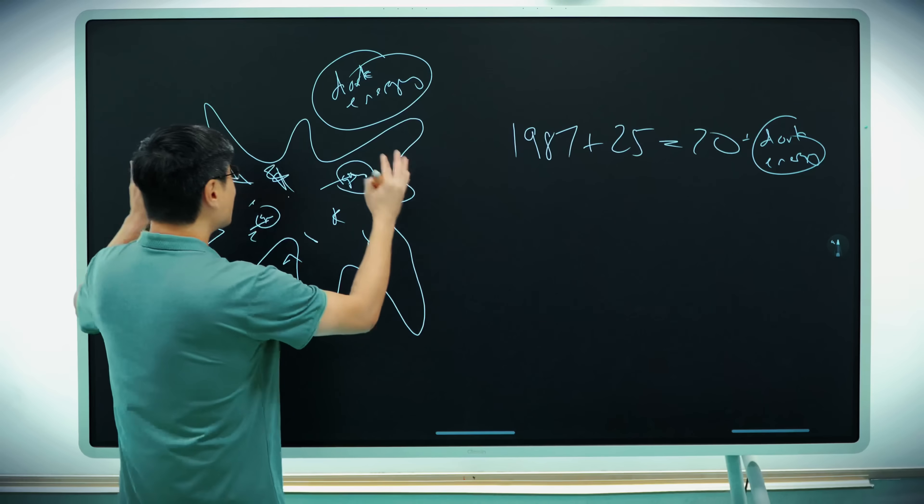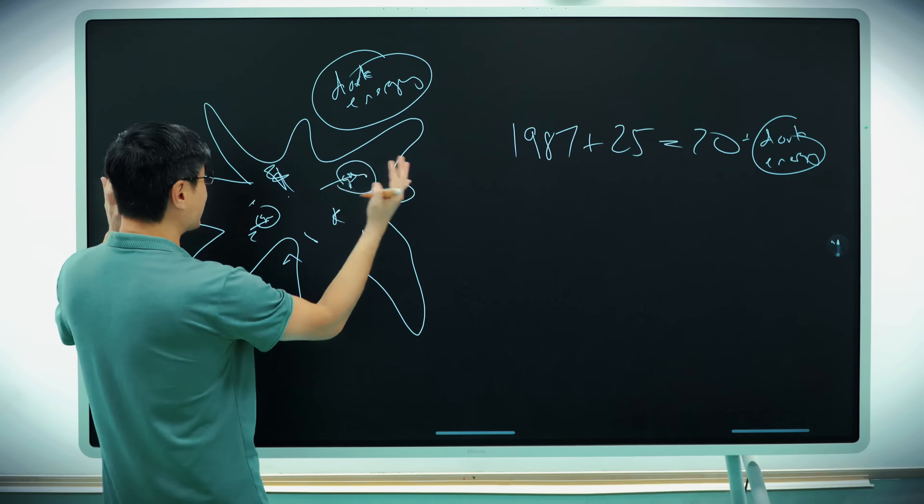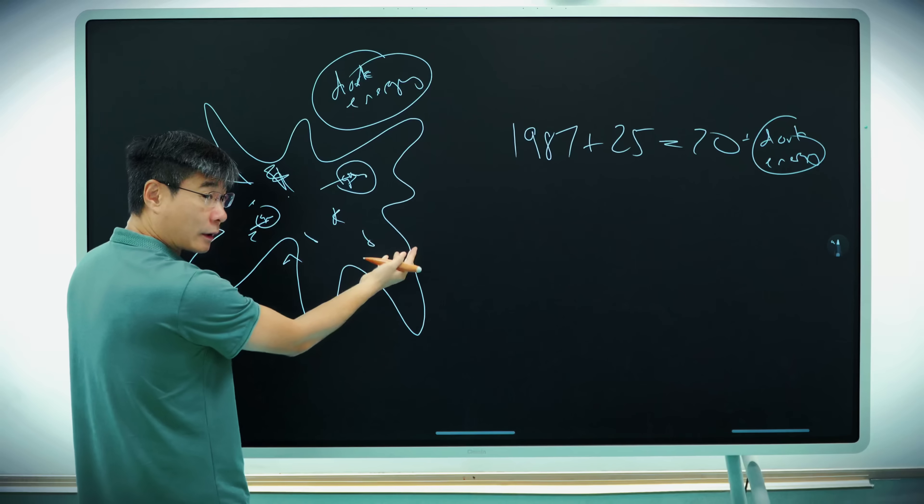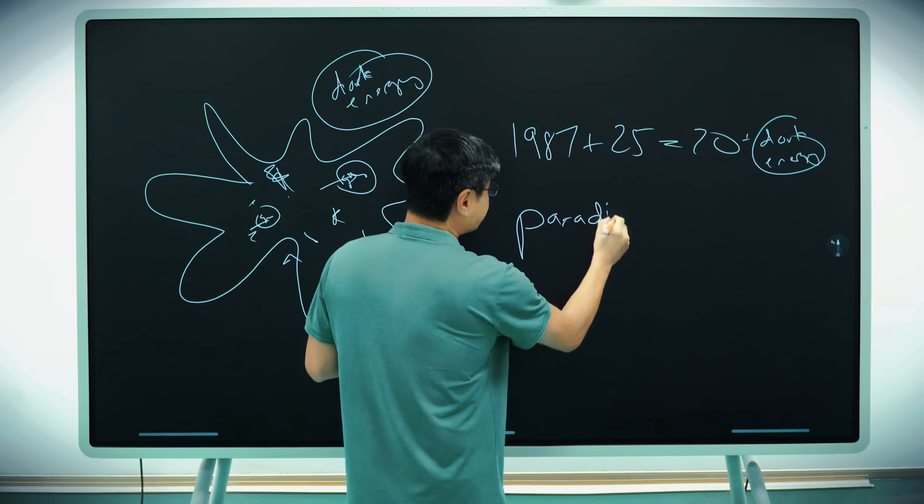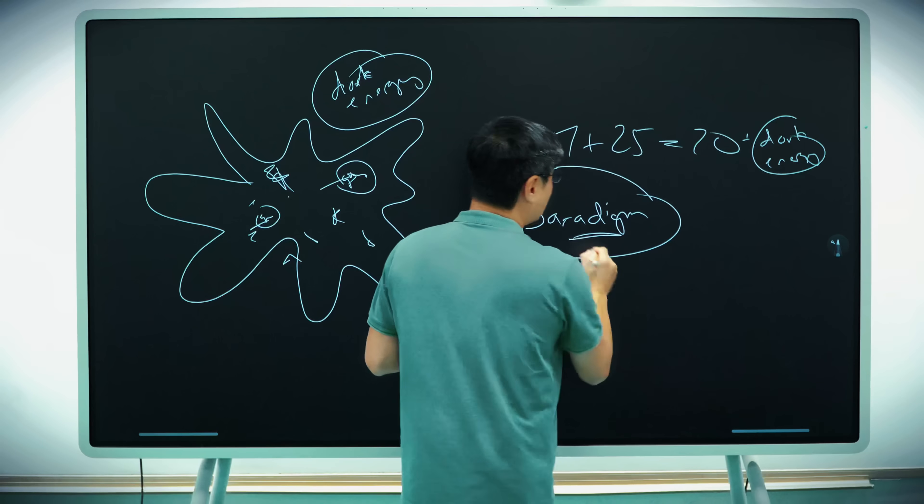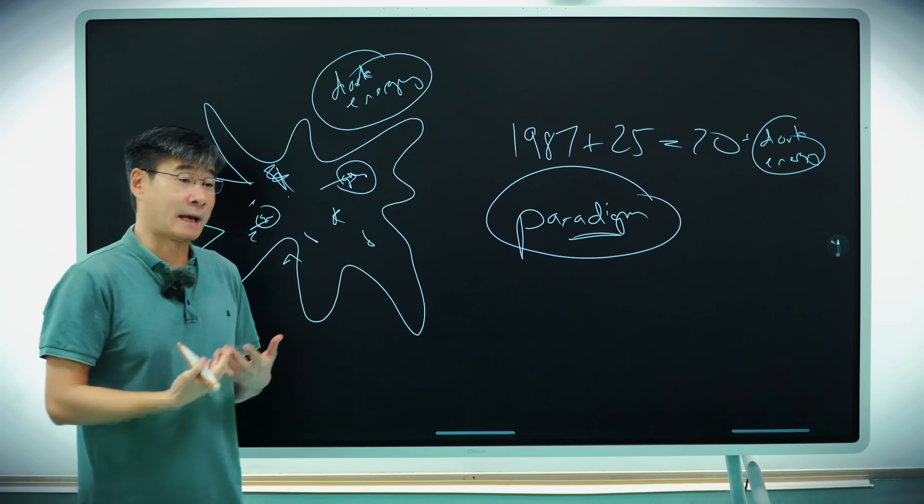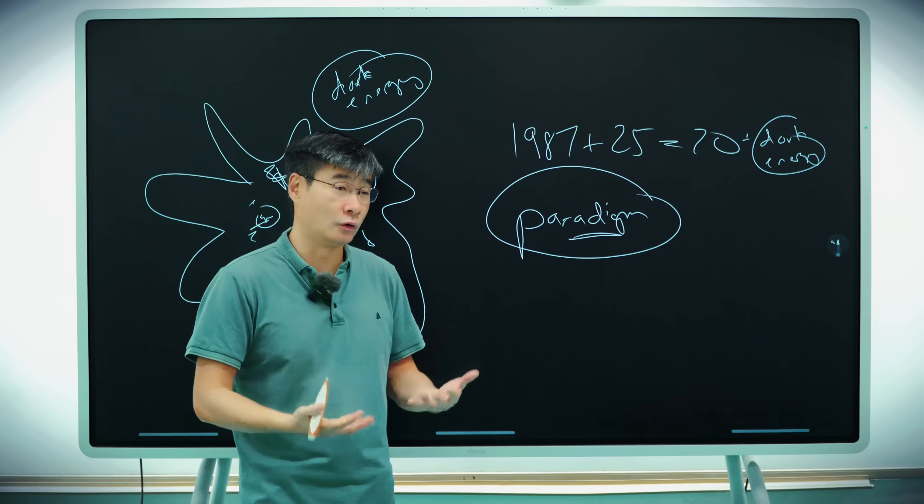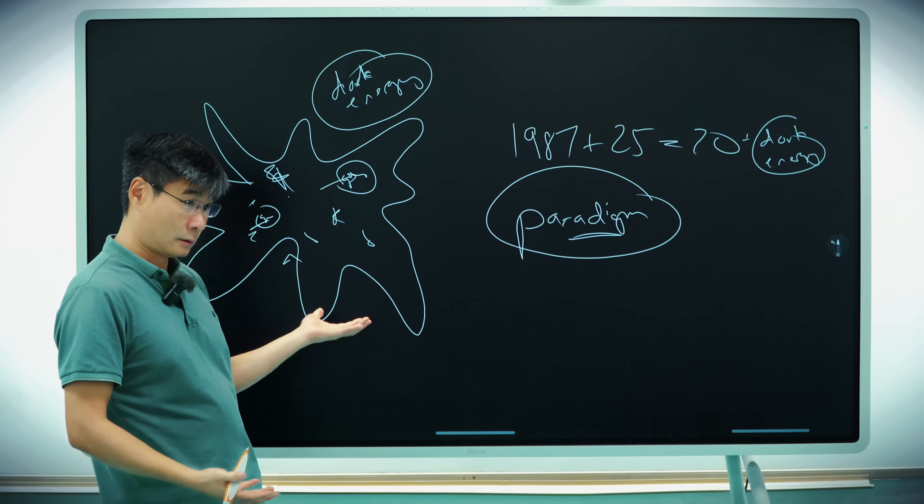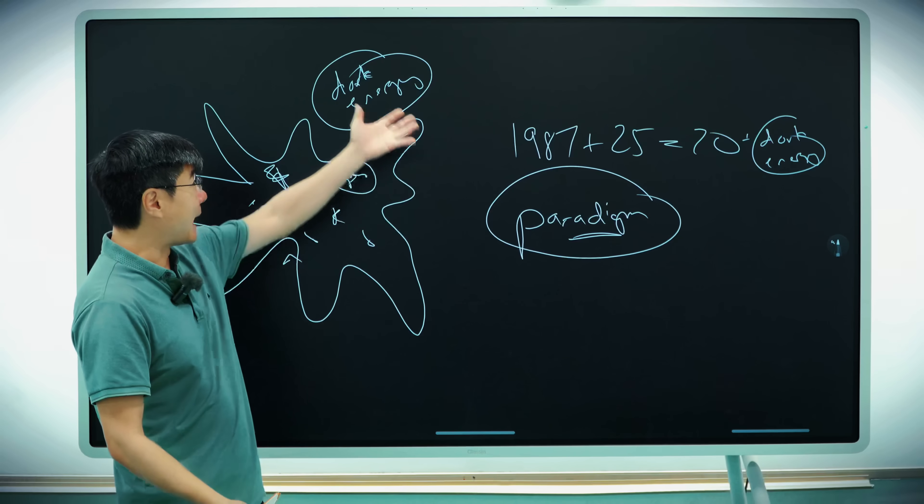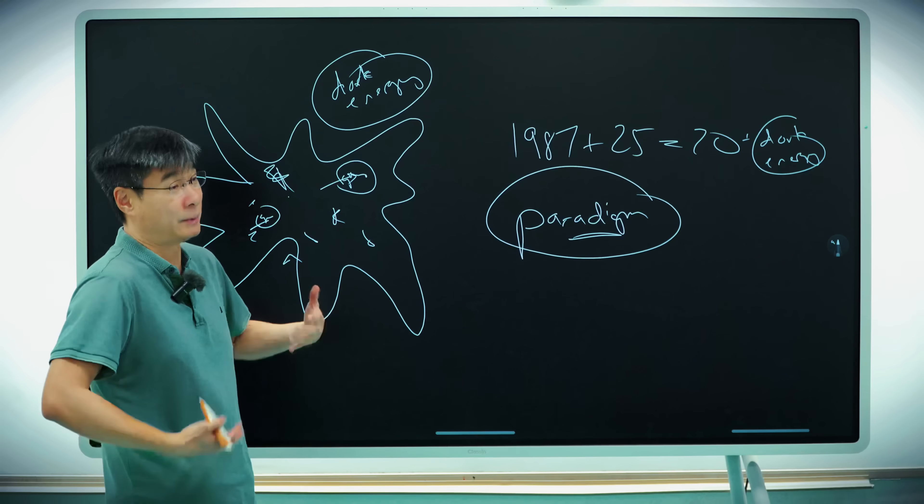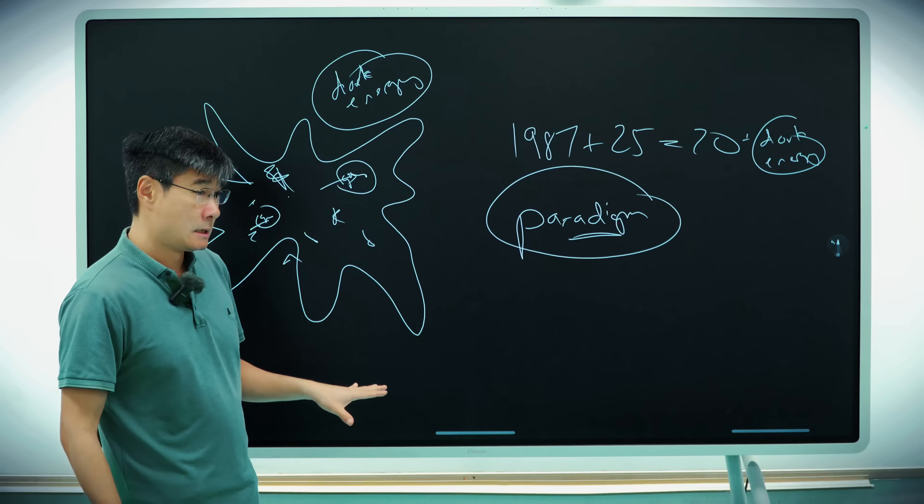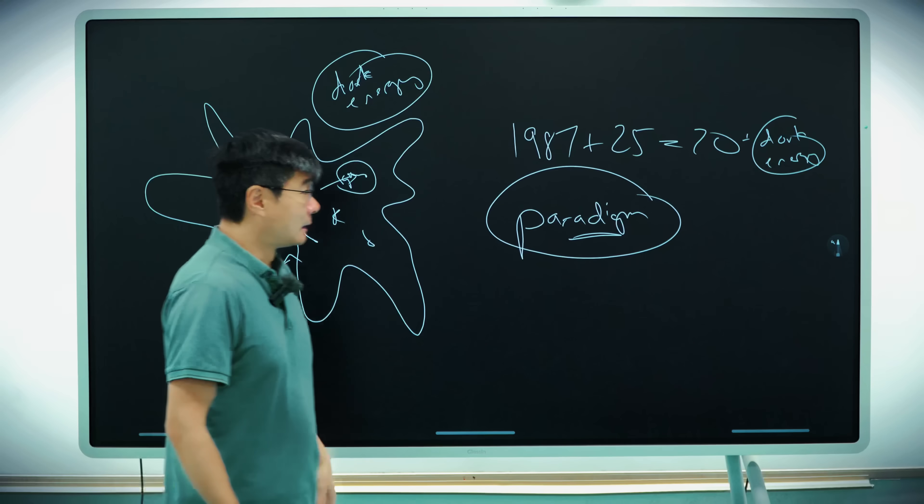So our current system of understanding the universe simply does not work. And the problem is that it's become a paradigm, a story that is accepted by most scientists, and they refuse to budge on this issue. But I'm telling you right now that this system is clearly problematic, and it could be wrong. So that's a problem with the Big Bang.